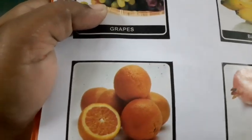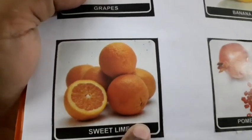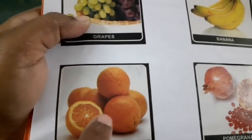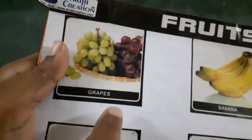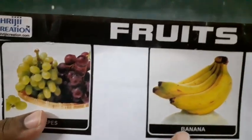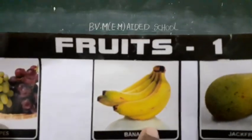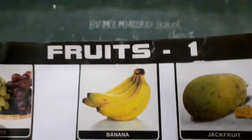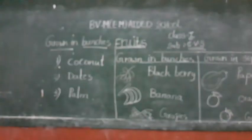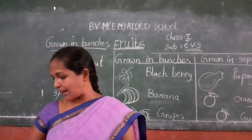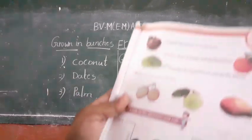Next, orange - we peel the skin of orange and eat the pieces. Next, banana - we peel the skin of banana and eat the fruit. Okay children, so some fruits we cut and eat, some fruits we peel and eat.